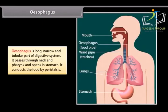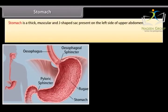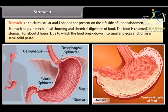The esophagus passes through the neck and pharynx and opens into the stomach. It conducts food by peristalsis. The stomach is a thick muscular, J-shaped sac present on the left side of the upper abdomen. It helps in mechanical churning and chemical digestion of food. Food is churned in the stomach for about three hours, breaking it down into smaller pieces and forming a semi-solid paste.